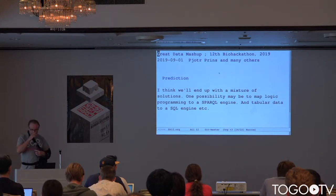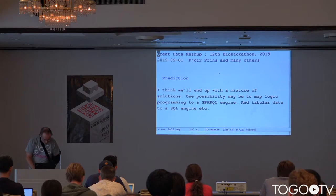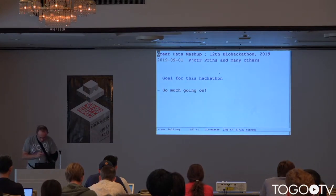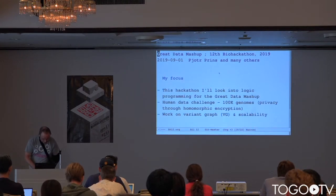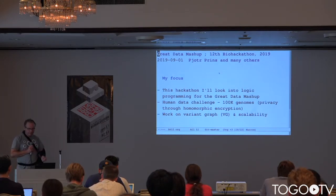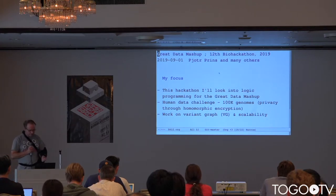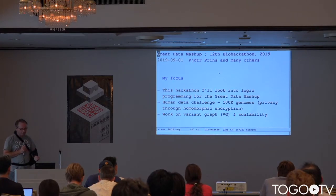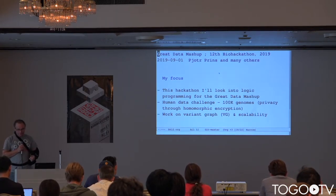So I think we'll end up with a mixture of solutions. My goals for this hackathon: I'm looking into logic programming for the great data mashup, and at the human data challenge. We are going to sequence 100,000 genomes in Tennessee, it appears. We want to protect privacy through homomorphic encryption, and I want to work on the variant graph and scalability.